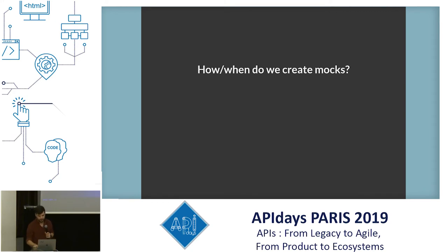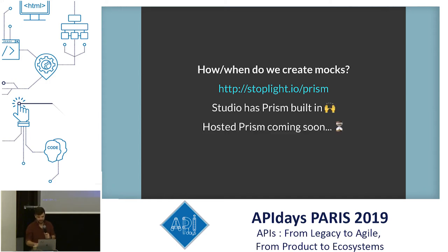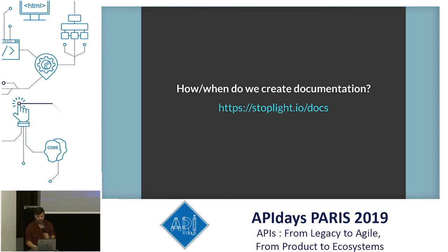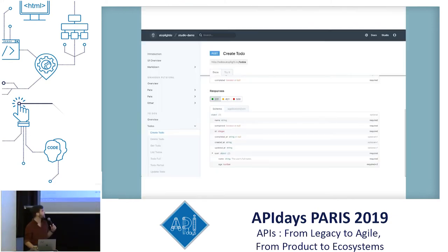That solved the visual part. How do we create mocks? Solved again. Prism is a command-line tool, but it's also built into Studio, and we have a hosted version coming out soon. How and when do we create documentation? Again, solved. If you go to Docs, it's totally free. There's a fancy paid version where you can have custom URLs, white labeling, and everything else. It looks pretty, it's really good. You can just click Publish and then it's published.